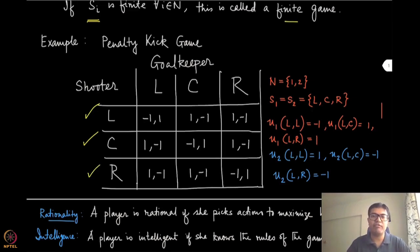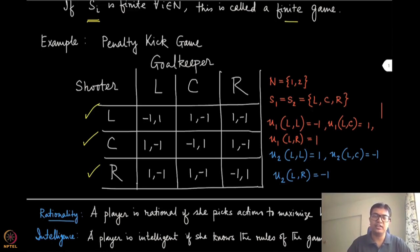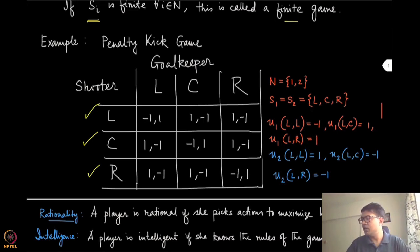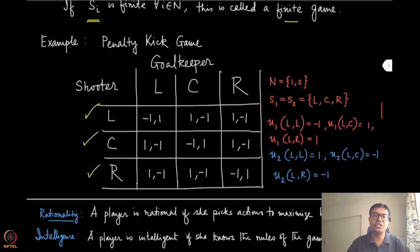Similarly, the goalkeeper can dive left, stay at center, or dive right. If both players choose the same direction, it is a loss for the shooter — the goalkeeper saves the shot, resulting in a payoff of minus one for the shooter and plus one for the goalkeeper. So all the diagonal entries of this matrix show minus one, one. For all other (non-diagonal) cases, the shooter shoots in a direction where the goalkeeper does not jump, so the goal is scored: the shooter gets a positive payoff and the goalkeeper gets a negative payoff.